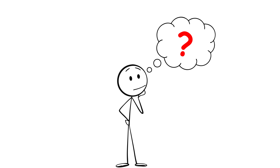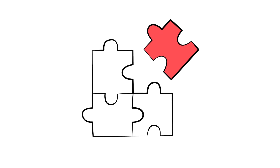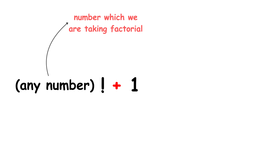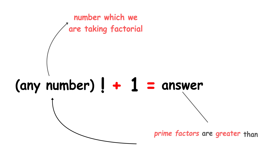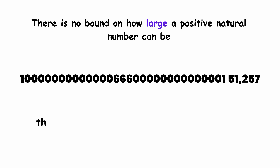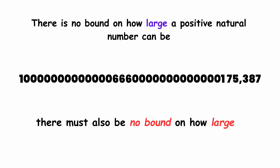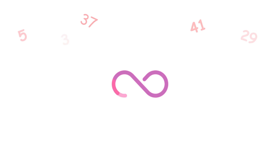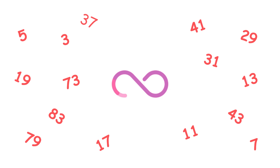Instead of 4, we can use any positive natural number we want, and the same logic will still apply. When we take the factorial of that number and then add 1, we will always get a number whose prime factors are greater than the number we started with. There is no bound on how large a positive natural number can be, so there must also be no bound on how large a prime number can be. Once again, we conclude that there must be infinitely many prime numbers.